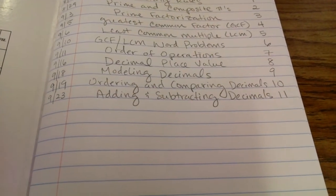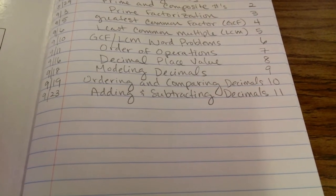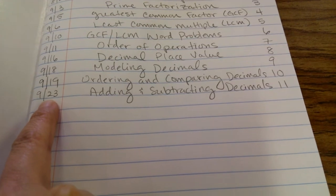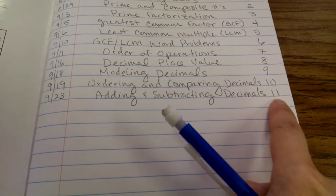Today we're going to take notes and talk about adding and subtracting decimals, which most of you guys probably remember from elementary school. So in your table of contents, you're going to put today's date, put adding and subtracting decimals, and mine's on page 11.